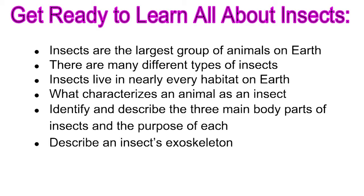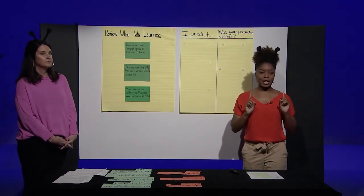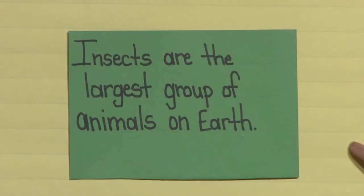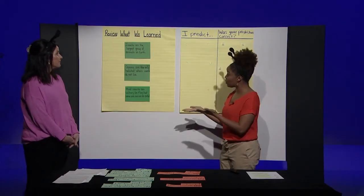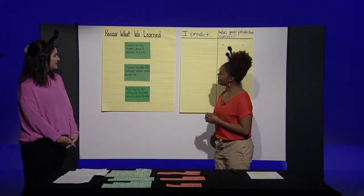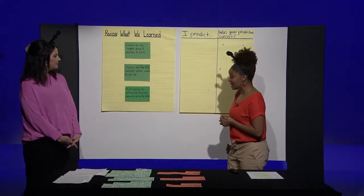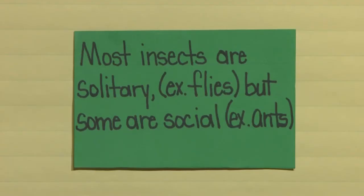Let's look at our KWL chart. We are going to review some things that you all learned with Ms. Allison. The first thing you learned was insects are the largest group of animals on Earth. The next fact was oceans are the only habitat where insects do not live. Lastly, you learned that most insects are solitary, but some are social, like ants.